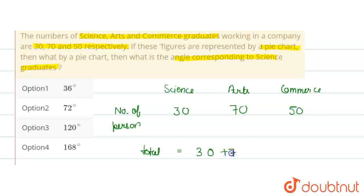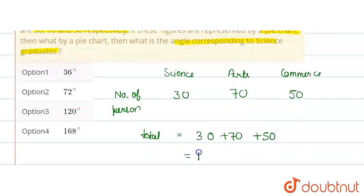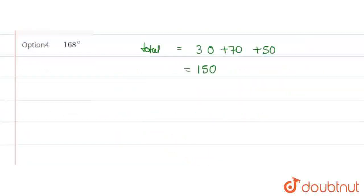Total: 30 plus 70 plus 50, which equals 150. So basically, we have to convert this data to a pie chart. And we know that a pie chart is circular.